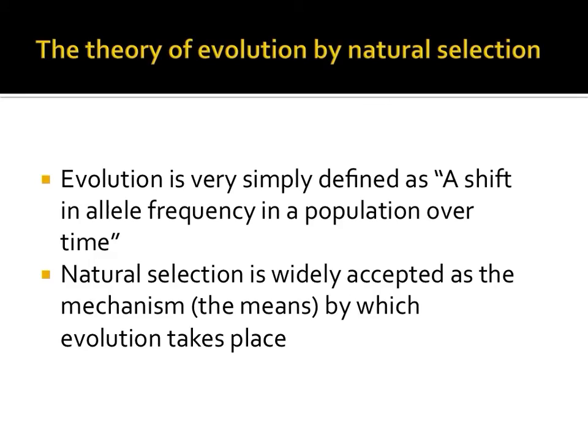Evolution can be defined as a shift in the allele frequency in a population over many generations. In more understandable language, it's a change in how common certain traits are in a large group of organisms over a long period of time. Evolution does occur, and there is not a shred of a doubt about it. There are many examples that humans can see with their own eyes in just a matter of days. The scientific theory of evolution includes an explanation of how it occurs through natural selection, which is commonly referred to as the survival of the fittest.